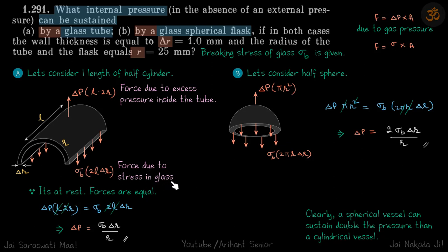Since this tube is at rest, forces are equal. Delta p into L into 2r equals sigma b into 2L delta r, which gives delta p equals sigma b delta r upon r. This is the maximum amount of pressure this tube can sustain.